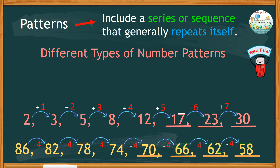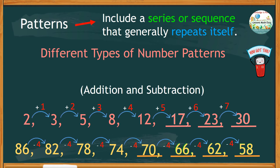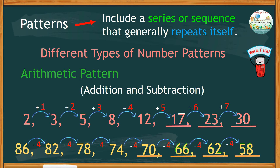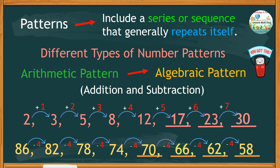What have you observed in these patterns? What are they based on? What do you call this type of pattern? From these examples, the given sequence is based on addition and subtraction. This type of pattern is called an arithmetic pattern, also known as an algebraic pattern.